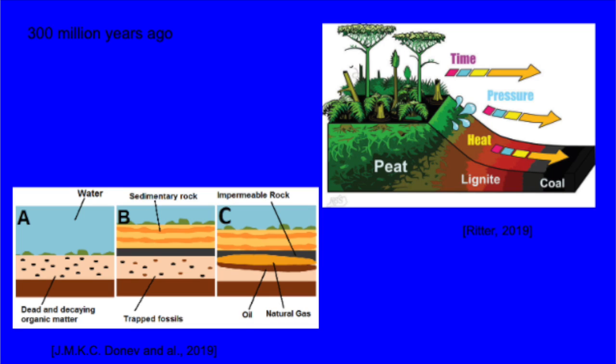The first one is coal. Coal is formed when plants sink to the bottom of swamps and, under pressure and heat, form peat. Peat over a long period of time will then form lignite, and over more time with heat and pressure, will form coal.